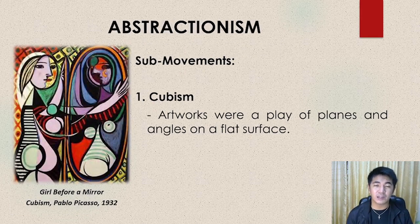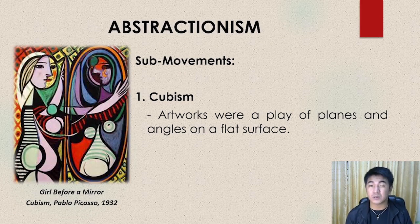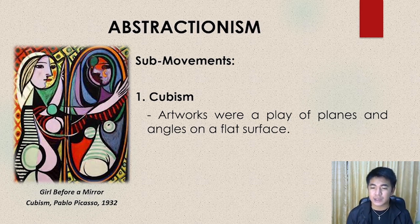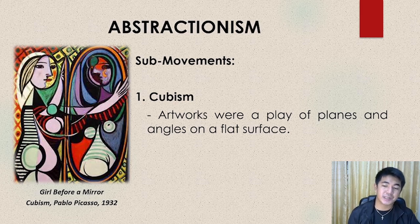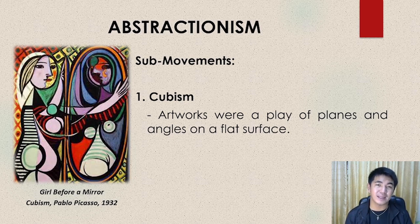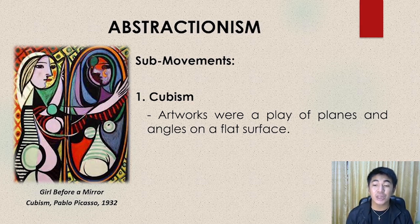We have another art movement, which is abstractionism. Abstract — sometimes we don't understand it, but abstract paintings actually carry deeper messages. The first sub-movement is Cubism. Cubism is artworks where there is a play of planes and angles on a flat surface. They use lines, colors, planes, and angles. Don't be confused — the root word of Cubism is cube, which is a form, but form is not used in Cubism. It is actually more on planes and angles on a flat surface — two-dimensional.